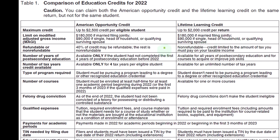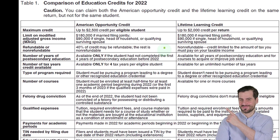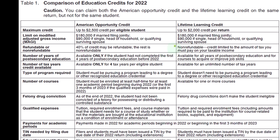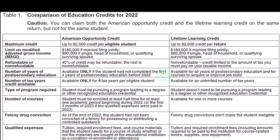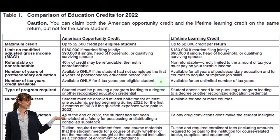Regarding refundability: the American Opportunity Credit — 40% of the credit may be refundable, taking the liability even below zero, resulting in a refund even if you don't owe any tax. The remaining 60% is non-refundable. The Lifetime Learning Credit is non-refundable, limited to the amount of tax you must pay on your taxable income. For the number of years of post-secondary education: the American Opportunity Credit is available only if the student had not completed the first four years of post-secondary education for 2022, whereas the Lifetime Learning Credit is available for all years of post-secondary education and for courses to acquire or improve job skills — much more expansive.